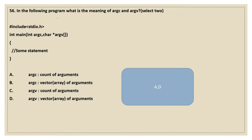Moving on to the 56th question. In the following program, what is the meaning of argc and argv? The code is hash include stdio.h, int main. This is the command line argument concept. The main function will have two parameters: argc and argv. argc means the count of the arguments, argv means the vector of the arguments. So A and D is our answer.